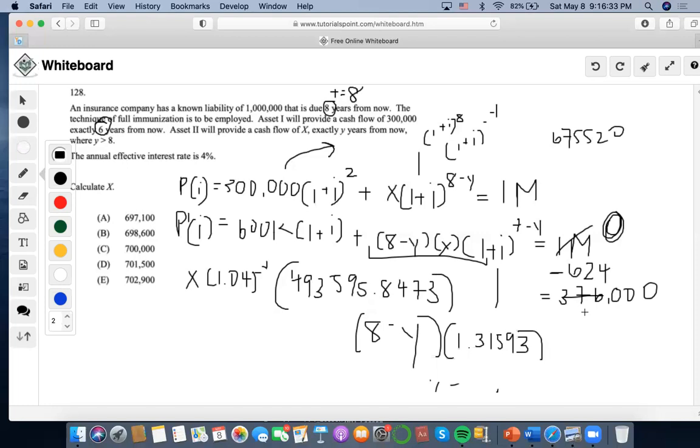Now, I'm going to take this negative 624,000 divided by 649,537.58, and I'm going to get negative 0.96 minus 8 divided by negative 1, and I'm going to end up getting y equals to 8.96.